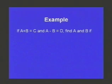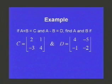Next example. Here we have A plus B is equal to C, and A minus B is equal to D. We're supposed to find A and B if they give us C and D. For C, they give us the matrix with 2, 1 as the first row, negative 3, 4 as the second. D is 4, negative 5 as the first row, negative 1, negative 2 as the second row.